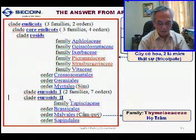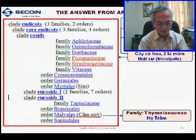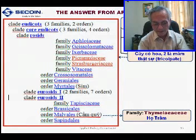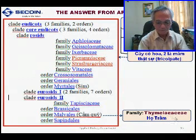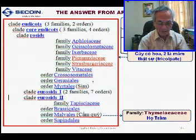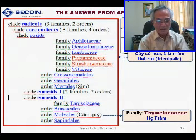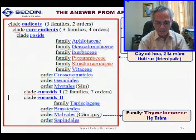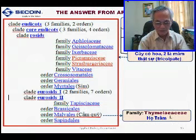Rosidae two is followed by one family and three orders, in which the order Malvales has a family similar to Malvaceae. Please be noted that in a later slide, I already said about the order Malvales — according to the Cronquist system, it consists of the family Malvaceae. But in the APG2 system, this family belongs to this order.